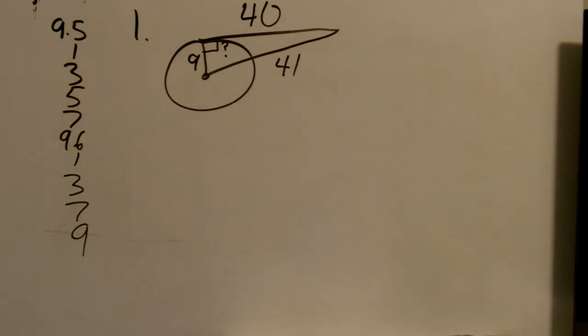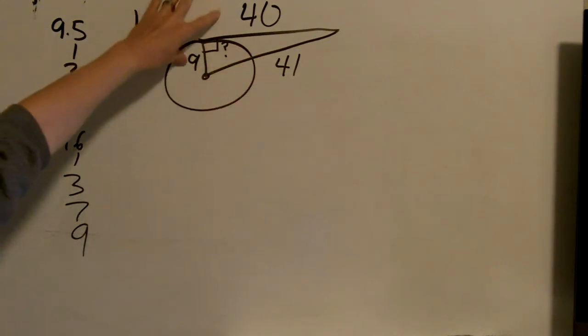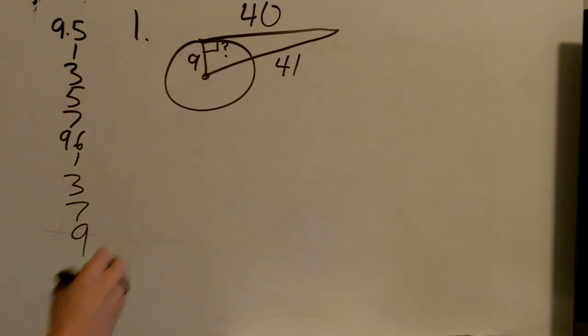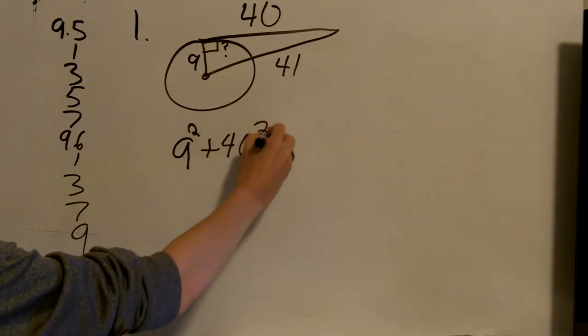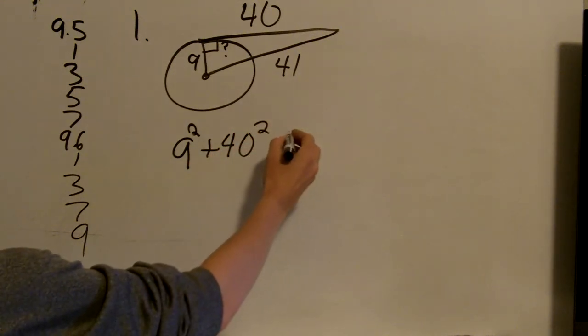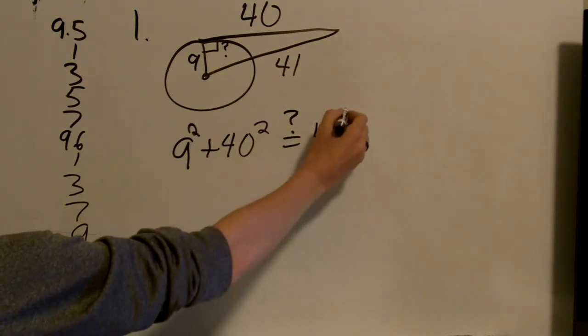Now to truly see if this is a right triangle, what we need to do is we need to take the three sides. Take the two smaller ones, square them, and add them together. 9 squared plus 40 squared. And check to see if that is equal to the largest one squared.